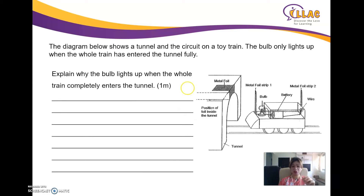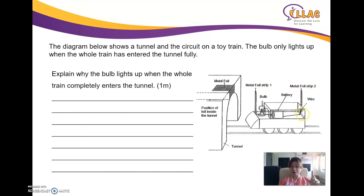That's a very common question. Now the last question: a tunnel with a circuit on a toy train. The train has metal foil strips connected to the battery. There is also a metal foil on the top of the tunnel. When the train enters, the metal foil strips close the gap and form a closed circuit, lighting the bulb. The bulb only lights up when the whole train has fully entered the tunnel.